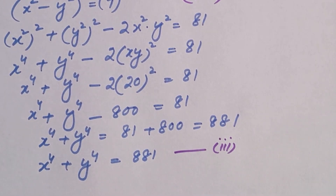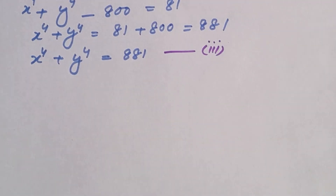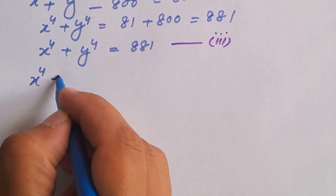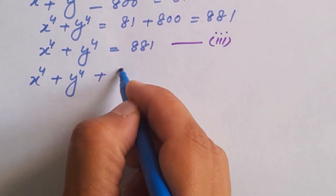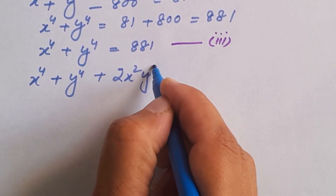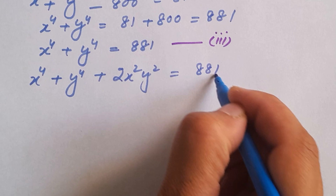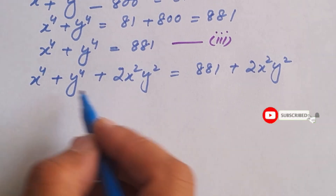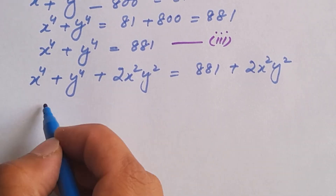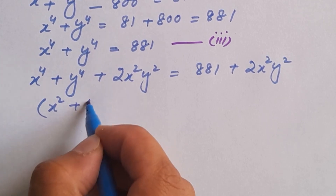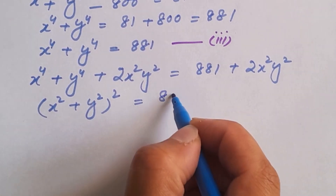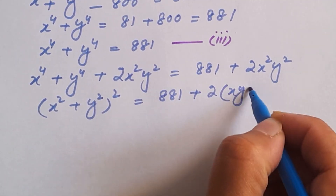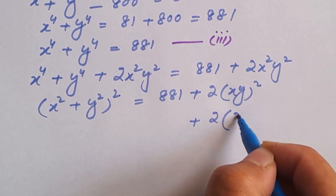To proceed, we are going to use equation 3. We are going to add 2x squared y squared on both sides of this equation. So the left-hand side becomes x to the power 4 plus y to the power 4 plus 2x squared y squared, and the right-hand side becomes 881 plus 2x squared y squared. If we look at the left-hand side carefully, this becomes the square of (x squared plus y squared). On the right-hand side, we have 881 plus 2 times (xy) whole squared.